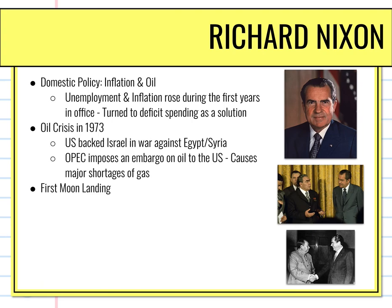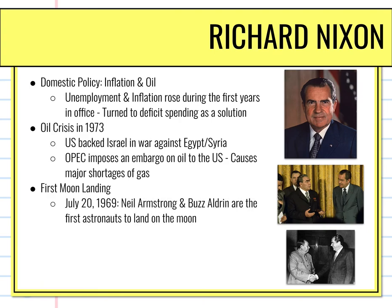During Nixon's first few years in office, he was actually president when we had our moon landing — though technically we're in the 1960s here. Neil Armstrong and Buzz Aldrin were the first astronauts to land on the moon in 1969. So JFK's promise in 1960 to put a man on the moon by the end of the decade came true during Nixon's presidency.